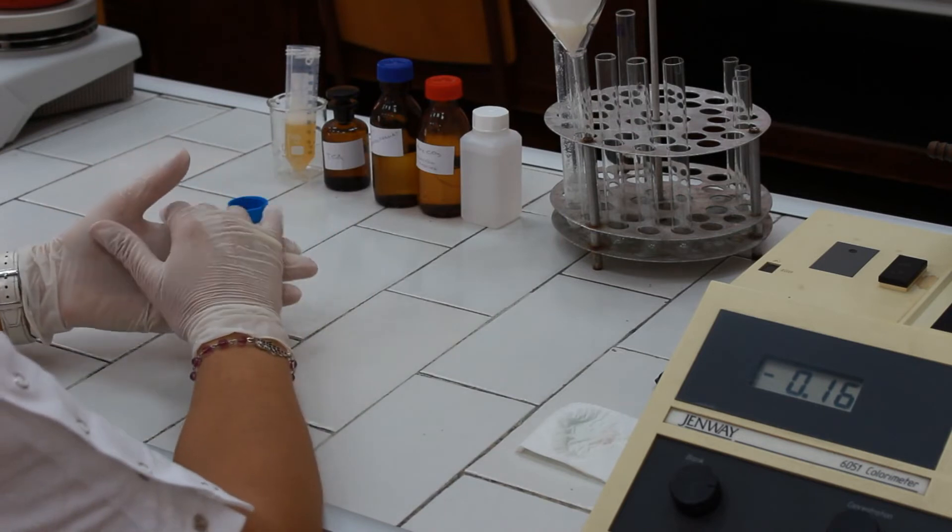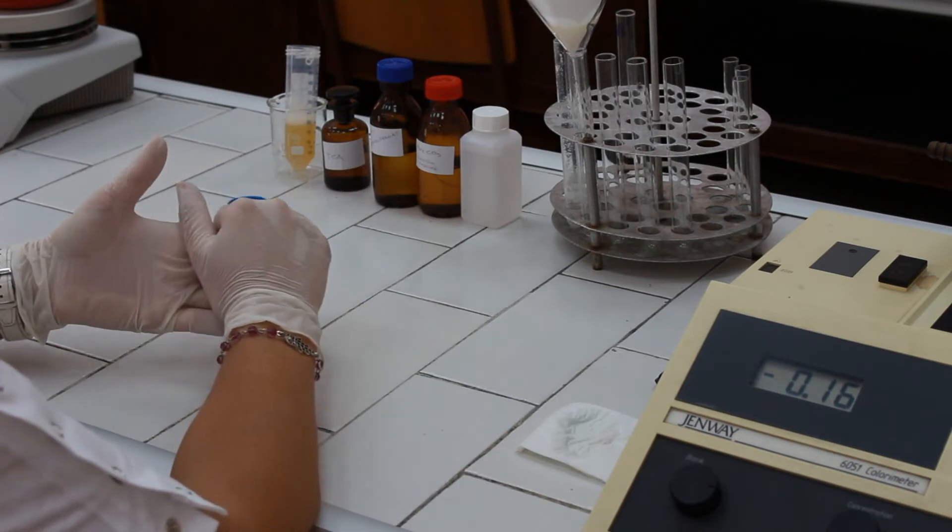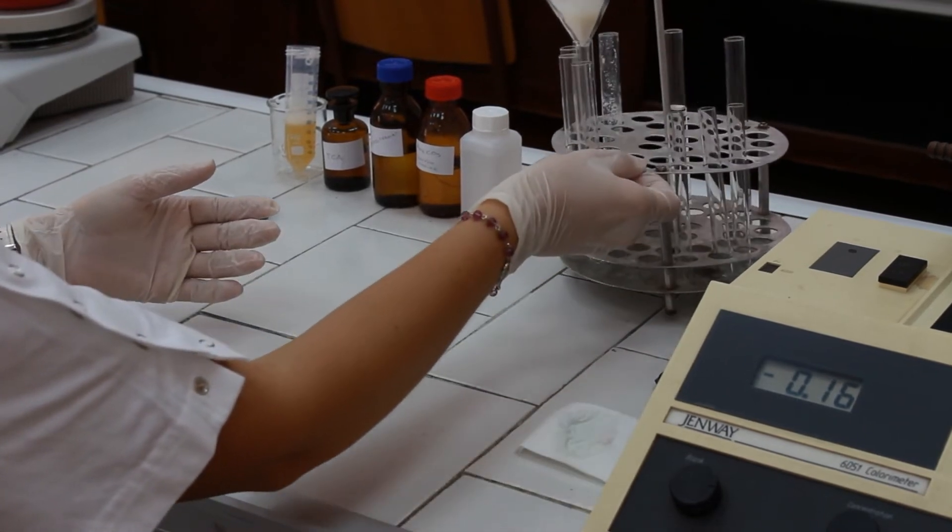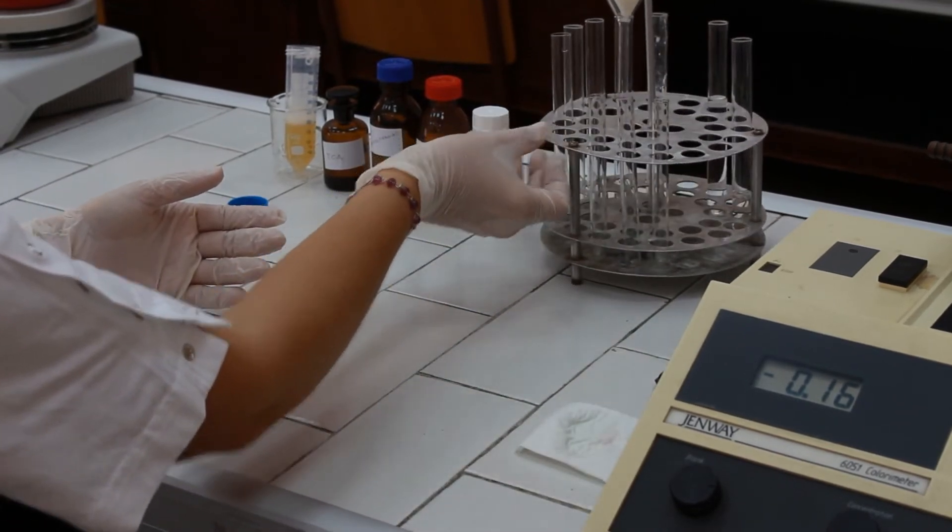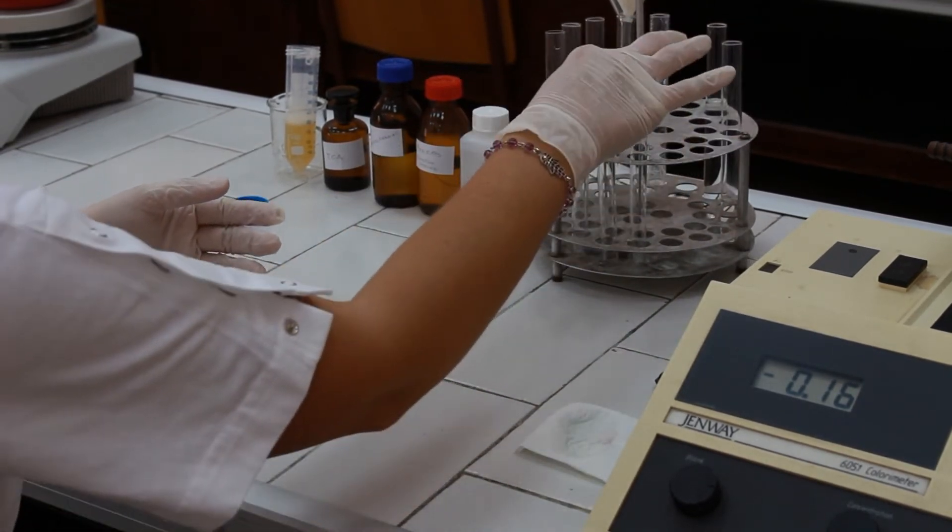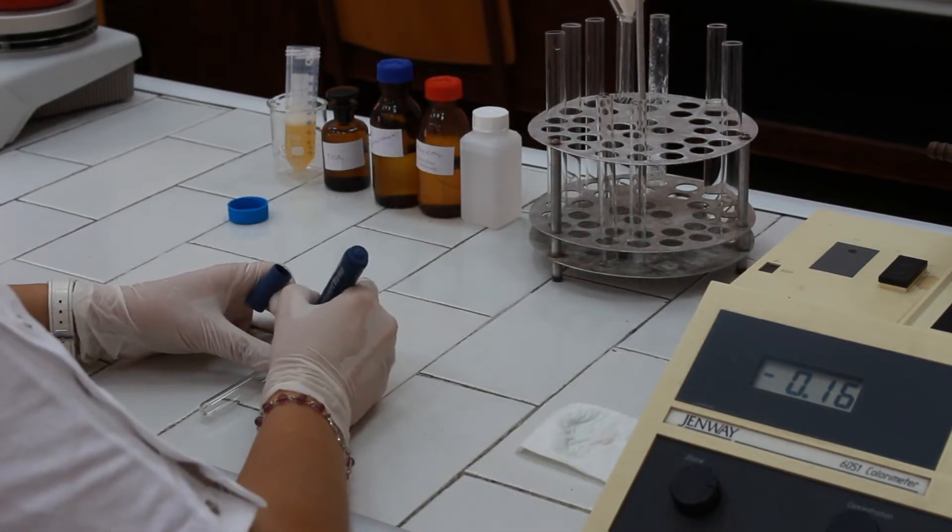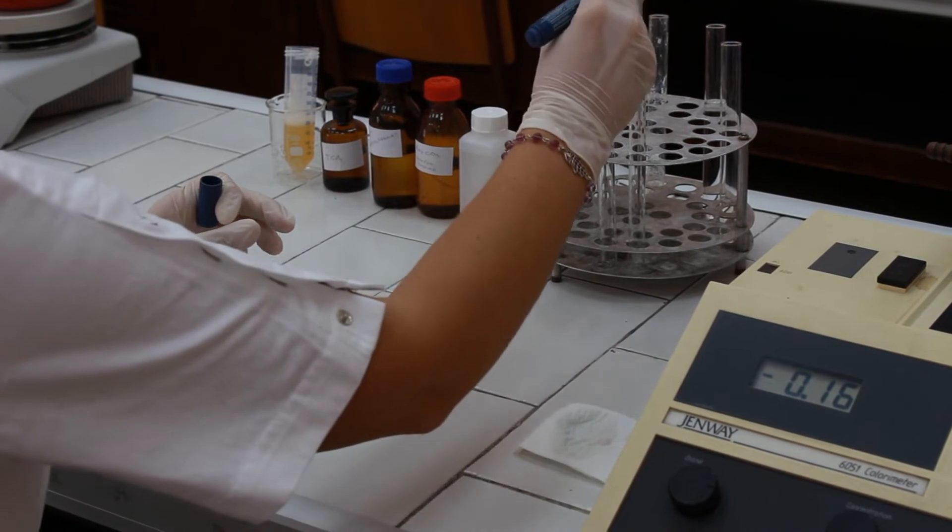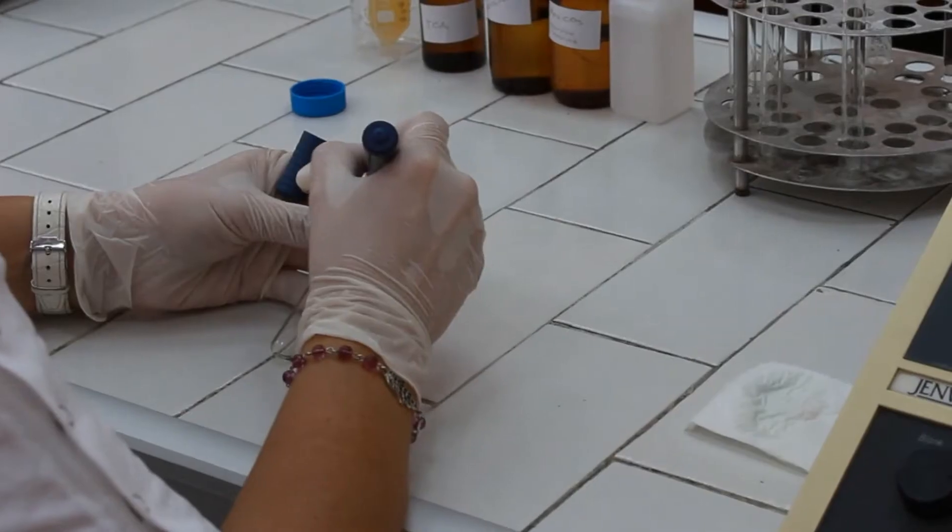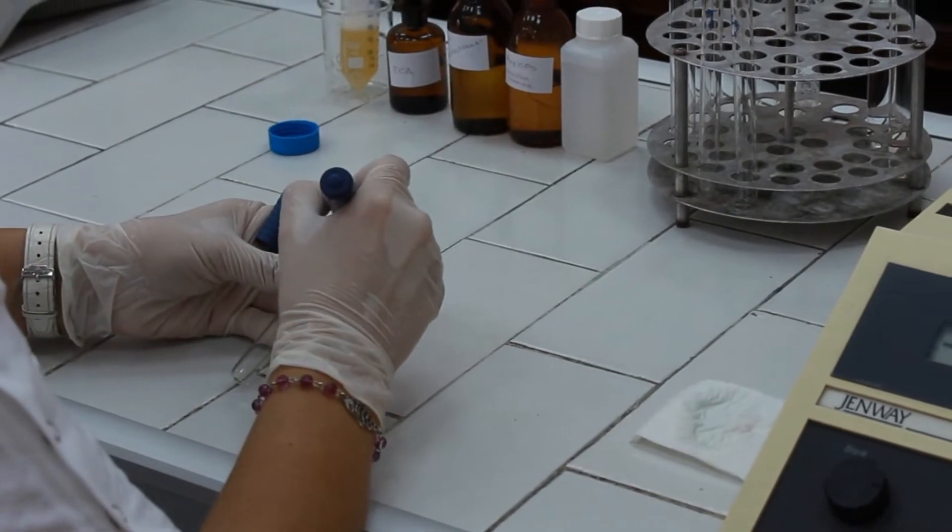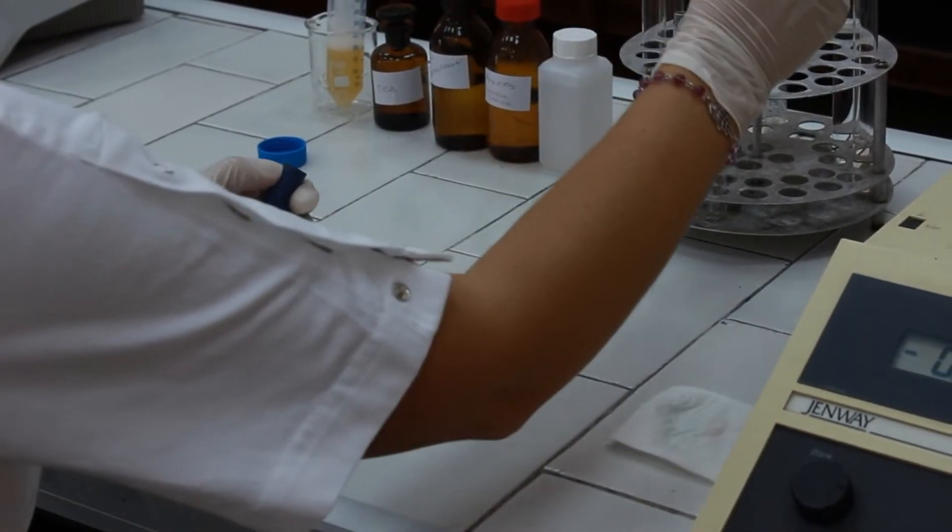While we are waiting to obtain the filtrate, we can perform the enzymatic reaction. For this purpose, we are going to need three test tubes and we are going to mark them as T for test, S for standard, and B for blank.